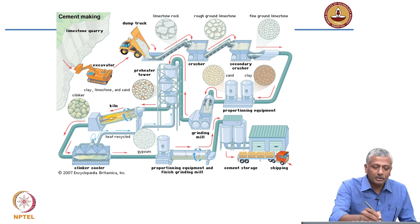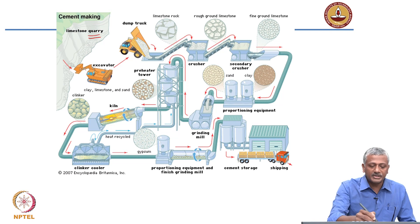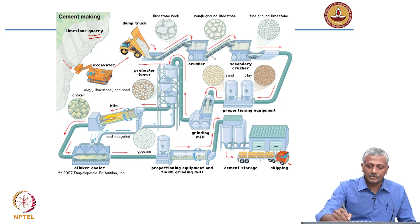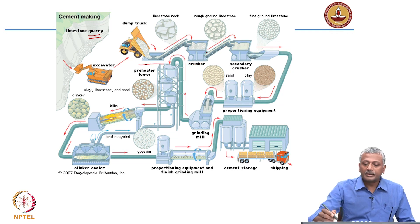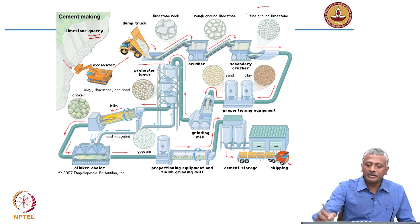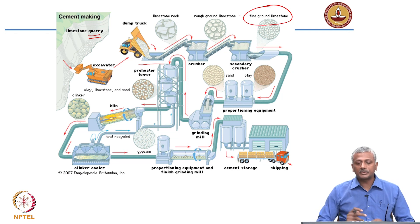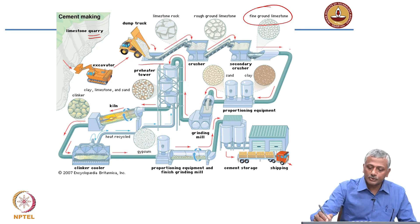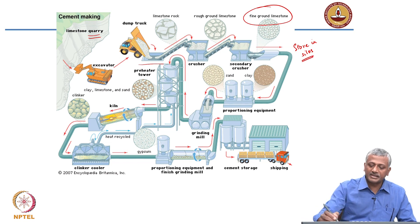You have a quarry from which limestone is extracted. After extraction, it goes through crushing — primary crusher, secondary crusher, and so on. Finally you get fine ground limestone of the right size, and that goes and gets stored in silos. A silo is basically a vertical cylindrical structure.